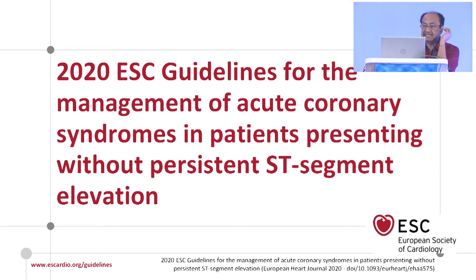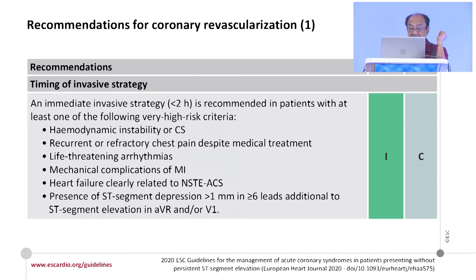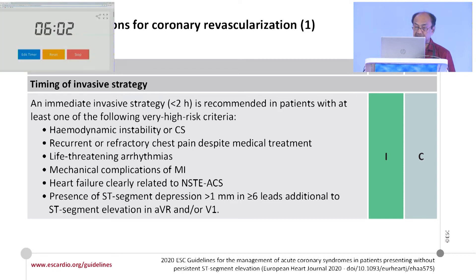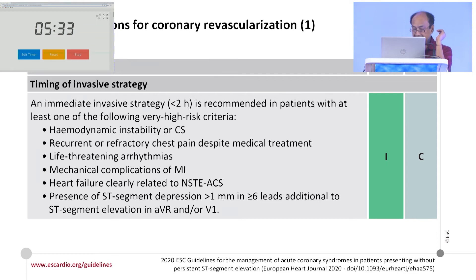The ESC recommends a subgroup of very high-risk patients should go for coronary intervention within two hours of admission. These include: hemodynamic instability or cardiogenic shock, recurrent and refractory chest pain despite medical treatment, life-threatening arrhythmia, mechanical complications of MI, heart failure, ST segment depression in more than 1 mm across more than 6 leads, and ST elevation in AVR and V1. ST depression in more than 6 leads plus ST elevation in AVR and V1 indicates left main or proximal LAD involvement. If ST elevation in AVR is greater than V1, it indicates left main lesion; if ST elevation in V1 is greater than AVR, it indicates proximal LAD lesion.